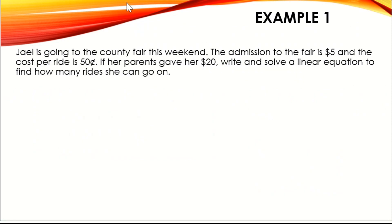Let's take a look at example one. Jael is going to the county fair this weekend. The admission to the fair is $5, and the cost per ride is 50 cents. If her parents gave her $20, write and solve a linear equation to find how many rides she can go on. We need to identify the initial value and the slope. The admission — that flat rate — is $5, so we say that is our b.